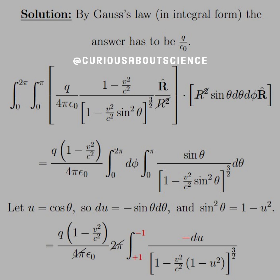Notice that the R squares cancel, and R-hat dotted with R-hat goes to 1, so we're good to go. Most of this stuff is constant, so we bring it out front. The Q over 4π ε₀ is pretty normal. We have that (1 − V²/C²) term, which is also constant with respect to the differentials. The φ integral is easy enough to split up and bring outside — we've seen that all semester.